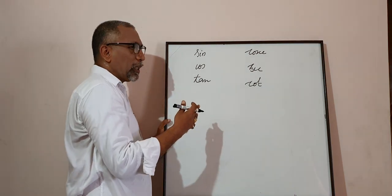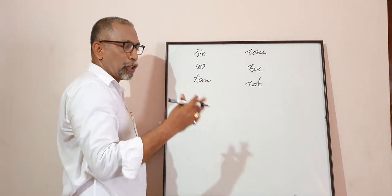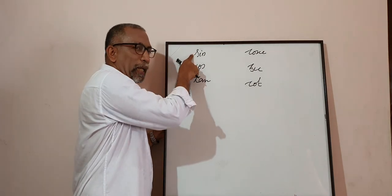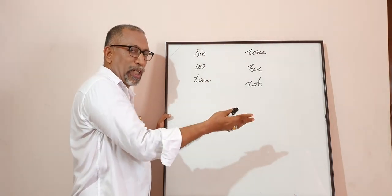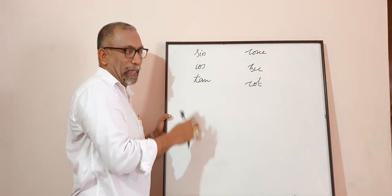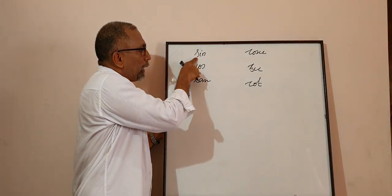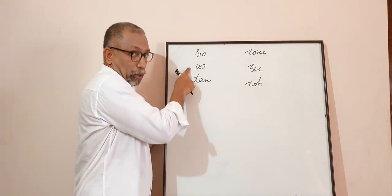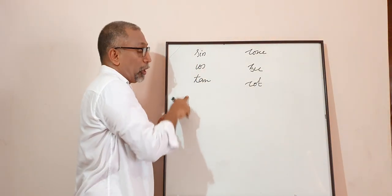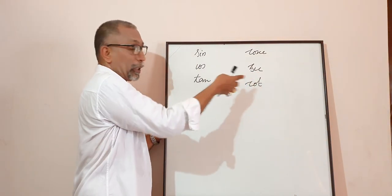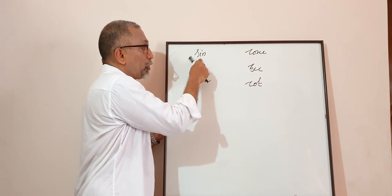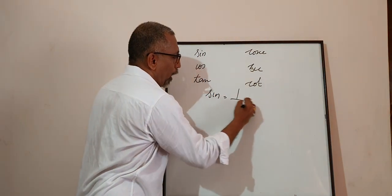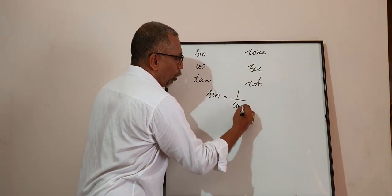When we are teaching children to remember these things, there are some confusions coming. It should not be from the same section — it should be from the other section. So sin is equal to 1 by cosec.